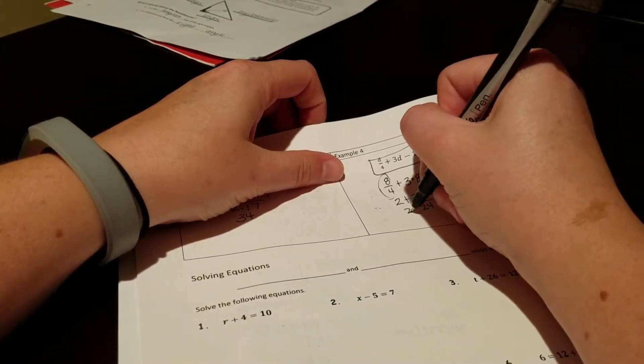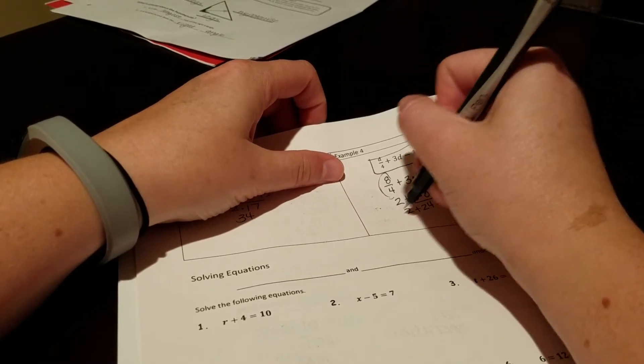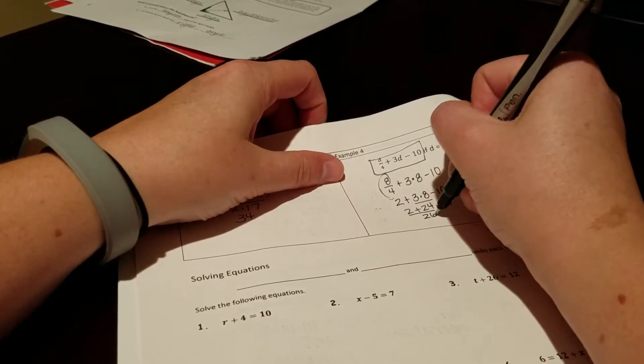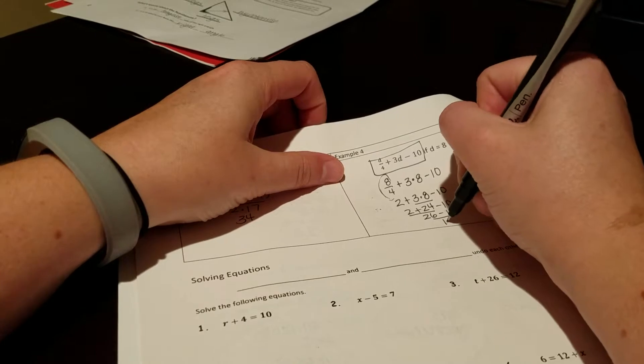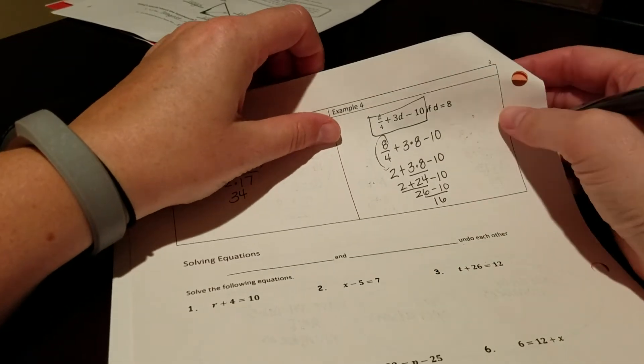Multiplication. And then we have add and subtract. So we go left to right. And we get 16 for our final answer.